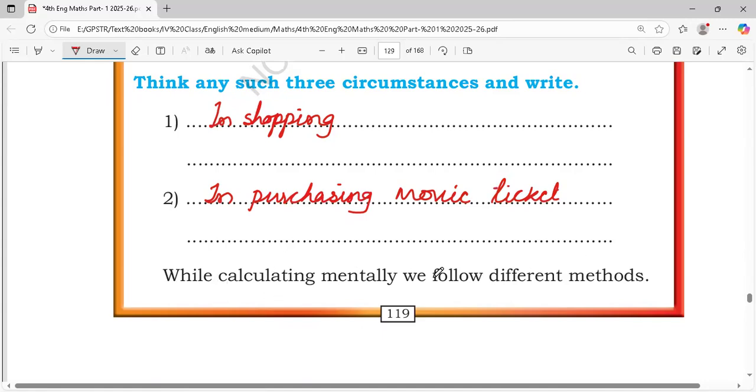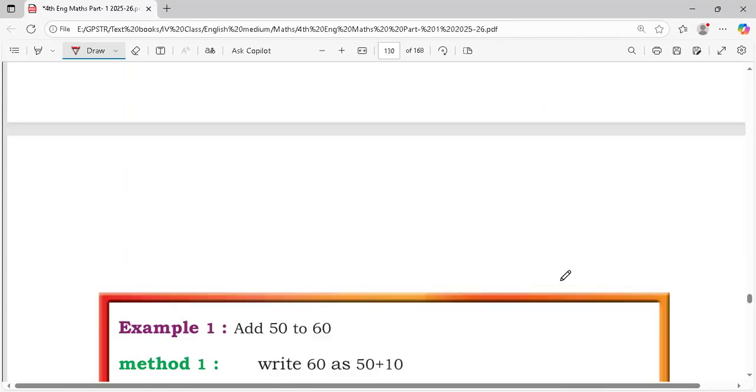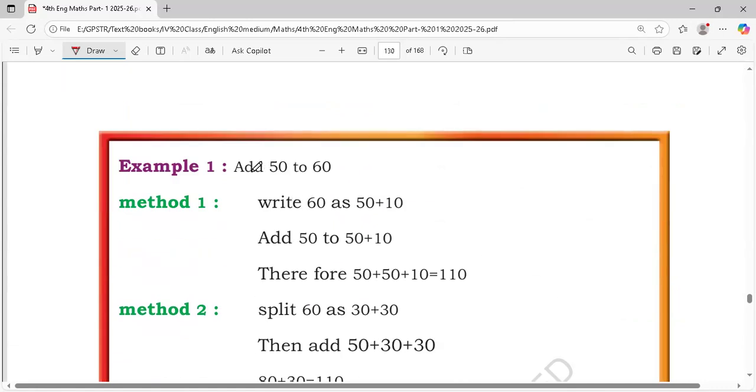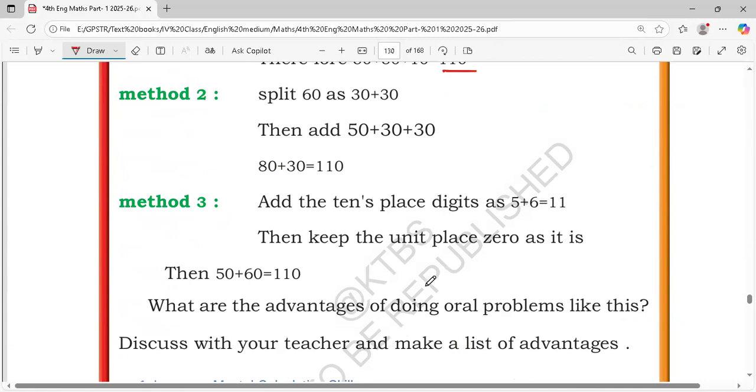And while calculating mentally, we follow different methods. See, add 50 to 60. This is Mental Arithmetic. Just 50 plus 50 plus 10, 100 and 10. See, 50 plus 50, 10. Make 10 groups or 100 groups, 1000 groups. So you can easily make mental problems.